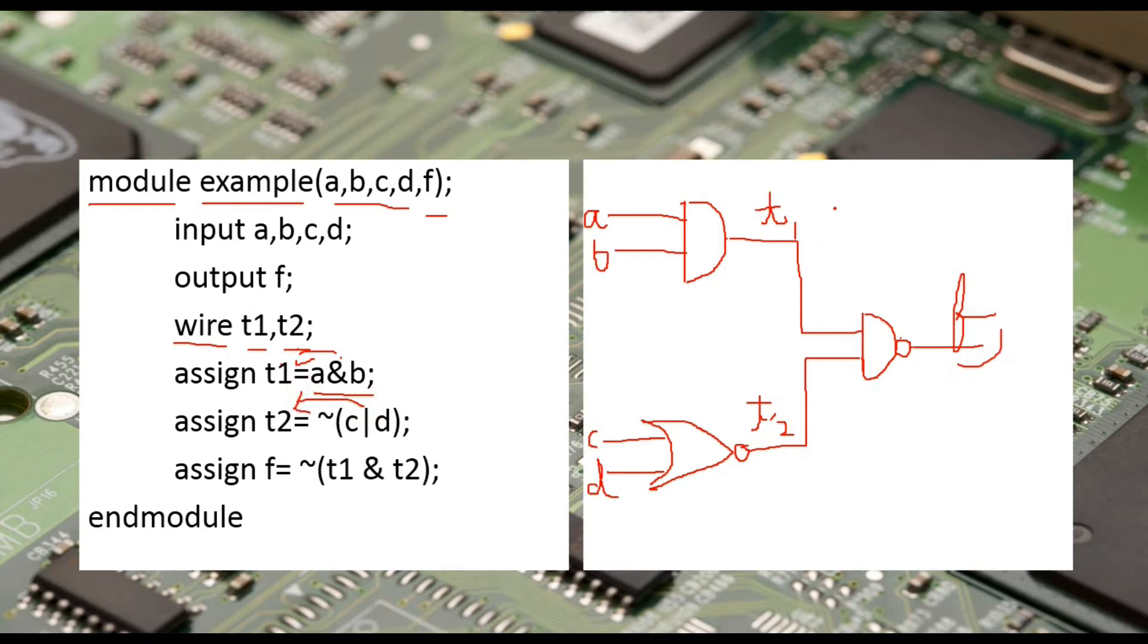Whereas the answer which we will get from t1 and t2 and their NOT, so AND gate and a NOT gate, that means a NAND gate, that value will be assigned to f. So now you can easily get the value of f, which is your output. So friends, like this we can implement any digital circuit in this manner by using the concept of modules.